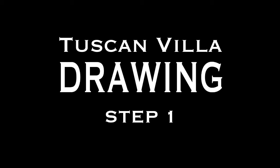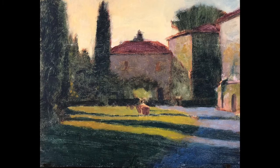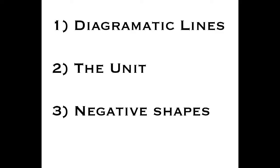Hi, everyone. Welcome to our six-part oil painting series, where we will complete a single painting over six sessions, breaking up the very difficult task of completing an oil painting into six smaller, manageable little wedges. Tonight will be part one of Painting a Tuscan Villa, The Drawing. In this drawing segment, we will deal with three major things that will help you have more accurate drawings and translate your image—from life, photo reference, or a sketch—onto your canvas. The three things are diagrammatic lines, the unit, and negative shapes.